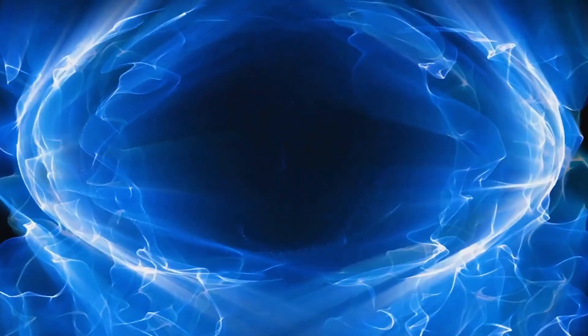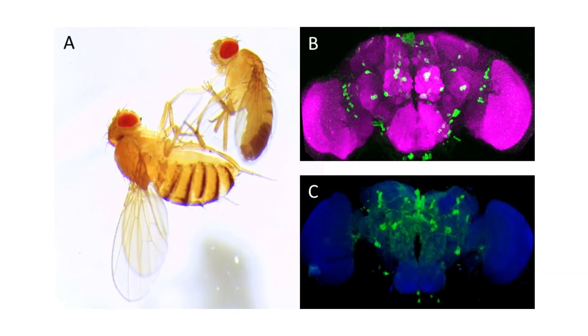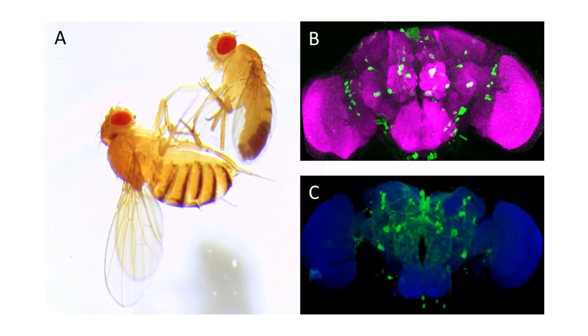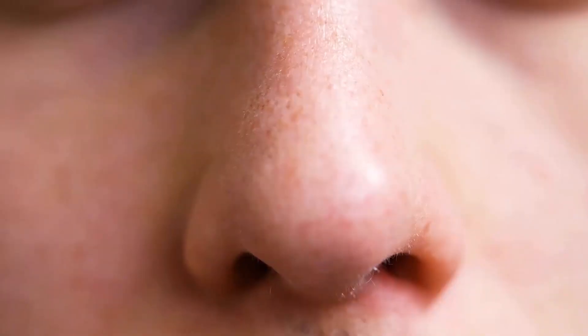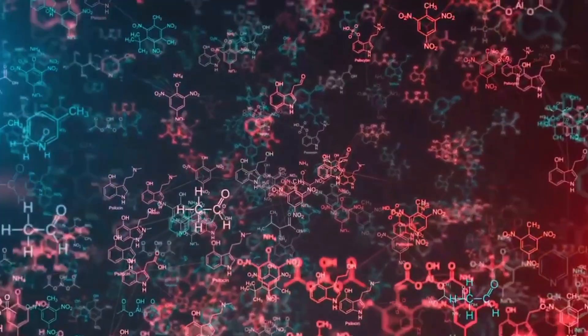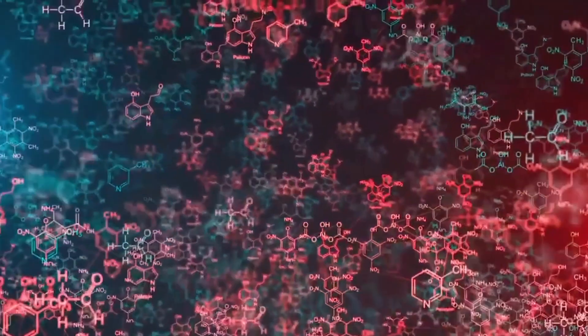While still controversial, this theory has gained support from experiments showing that fruit flies can distinguish between molecules with different vibrations but identical shapes. Human studies have shown similar results with molecules containing different hydrogen isotopes, which have identical shapes but different vibrations.